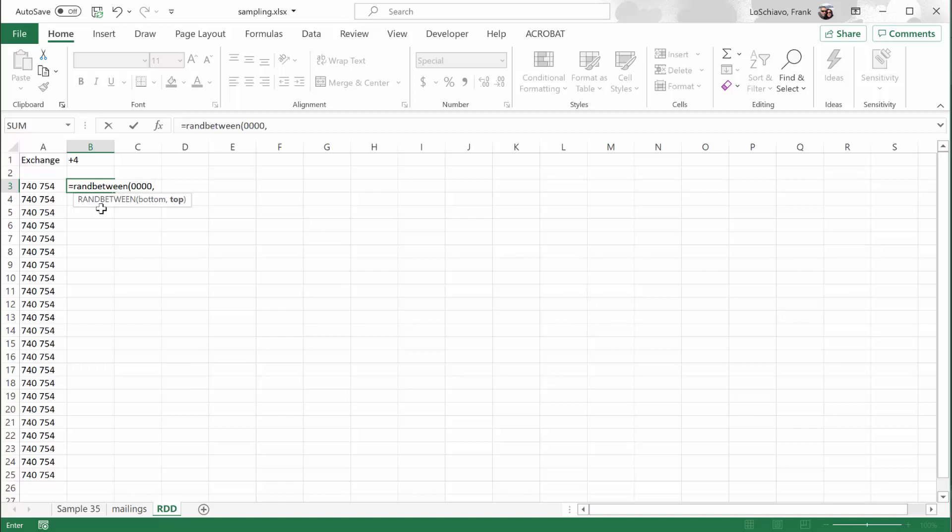Type in the largest four-digit number that we could use, 9999. And now Excel is going to randomly select a four-digit number between those two. So I hit enter.